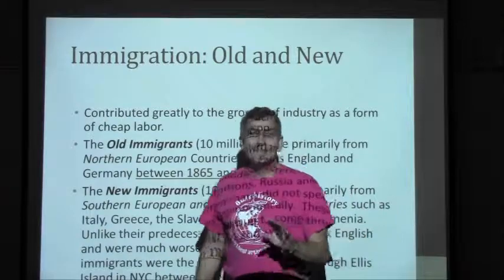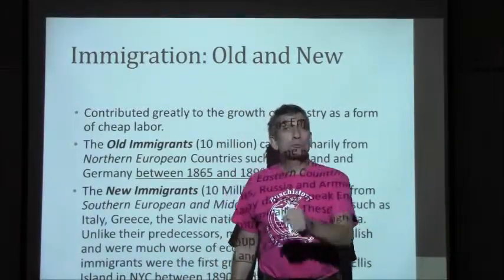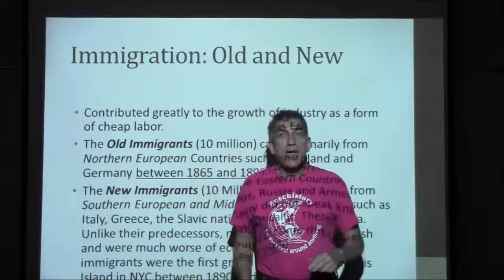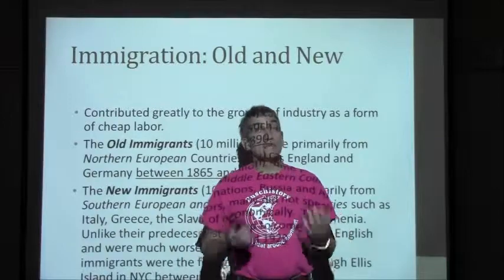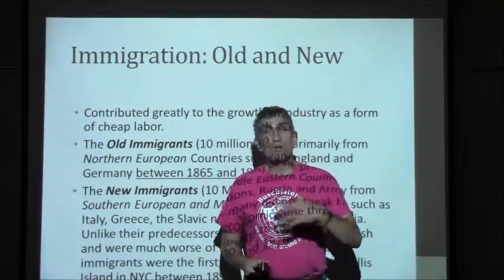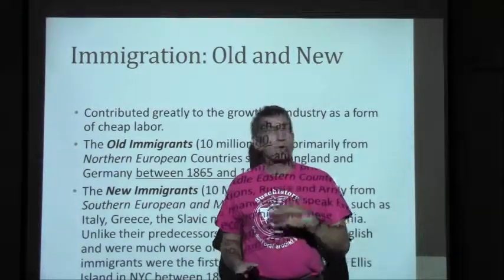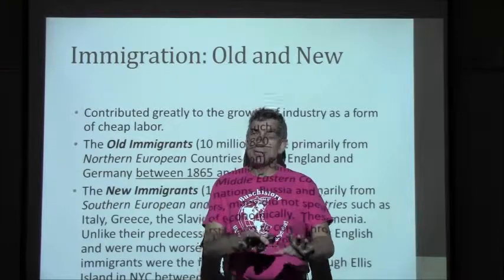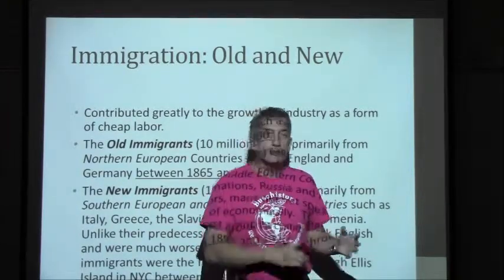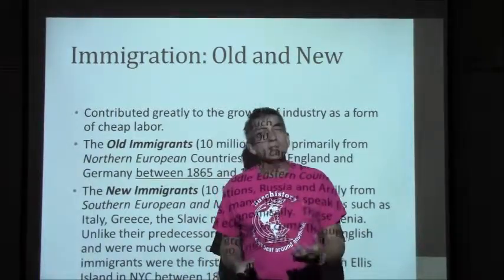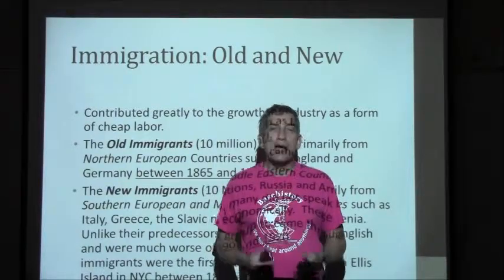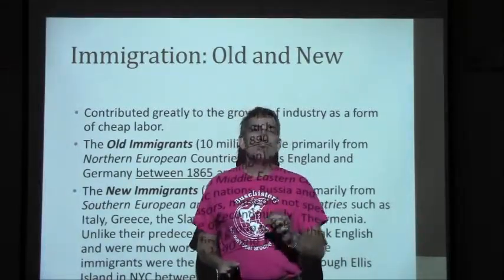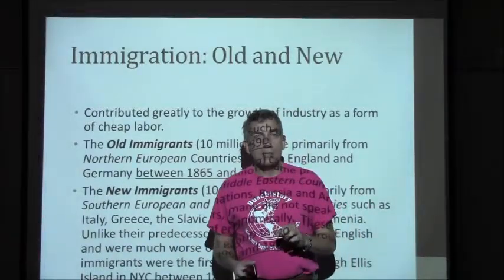The idea that Ellis Island was a welcoming gateway is largely a myth. Prior to Ellis Island and its counterpart Angel Island off San Francisco, immigrants could enter the United States through any port. Once Ellis Island was built, poor immigrants had to go through background checks, health checks, and criminal checks before they could enter. Wealthy people simply stayed on the ship and docked in New York Harbor. So Ellis Island was not a gateway — it was a gate designed to keep undesirables out, a processing center to ensure people were more desirable rather than less.